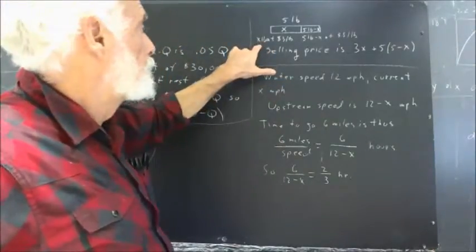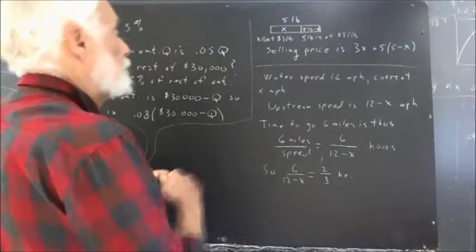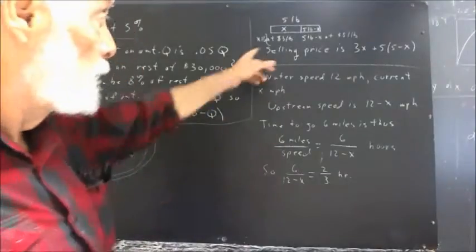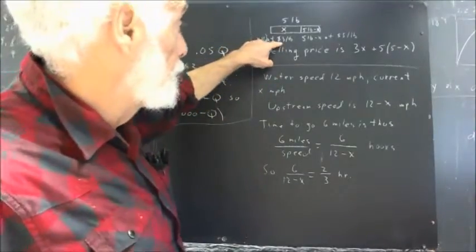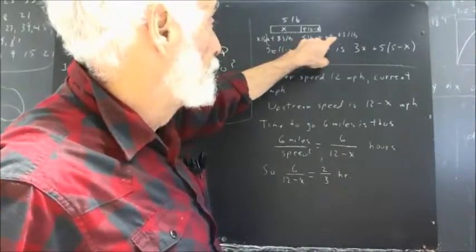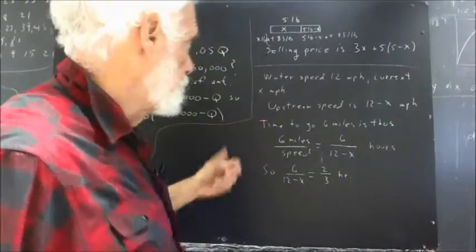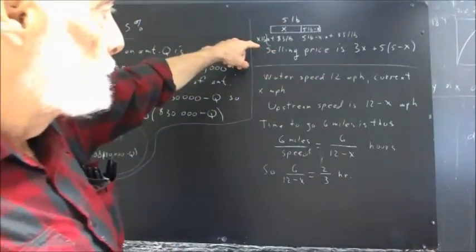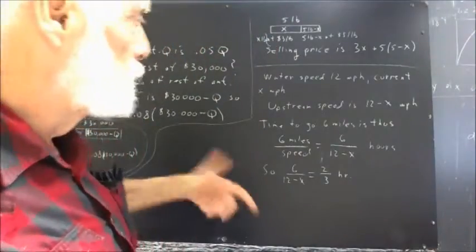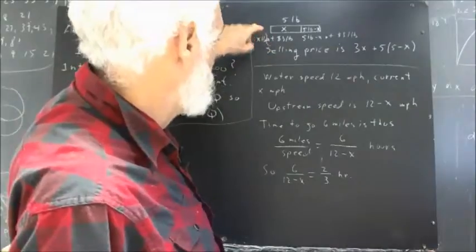We have X pounds at $3 a pound, 5 pounds minus X at $5 a pound. I'm not being real consistent with my units here, but we get the idea. I don't want to divert our attention by being really rigorous there, so it's going to be a little fuzzy right now. We'll get a little more precise later.